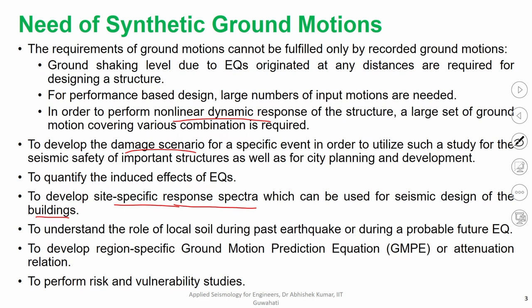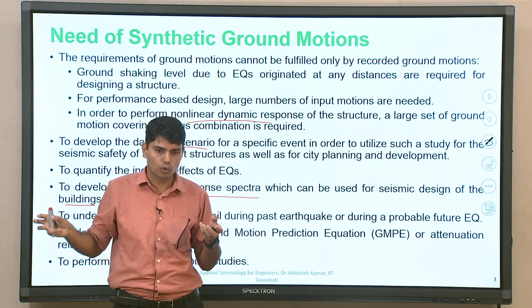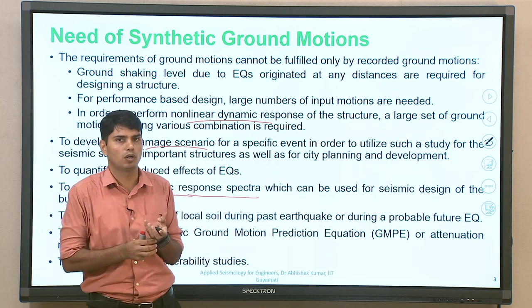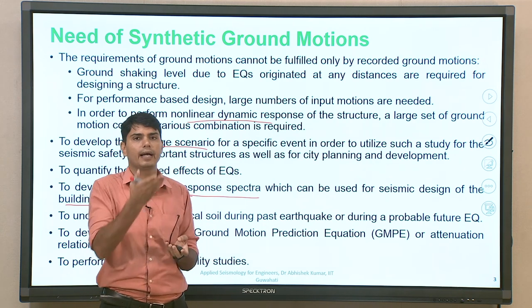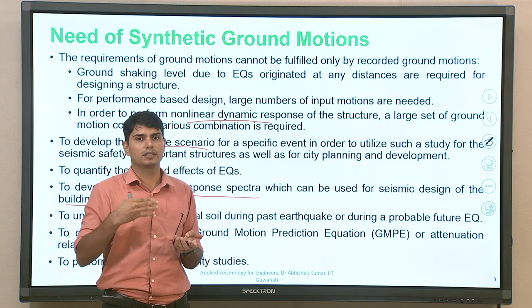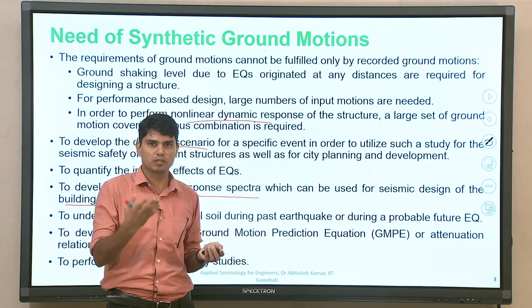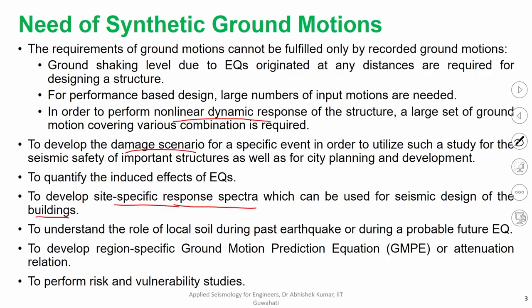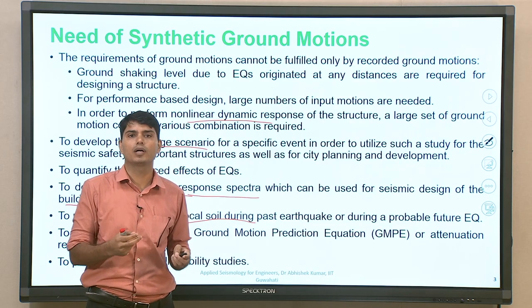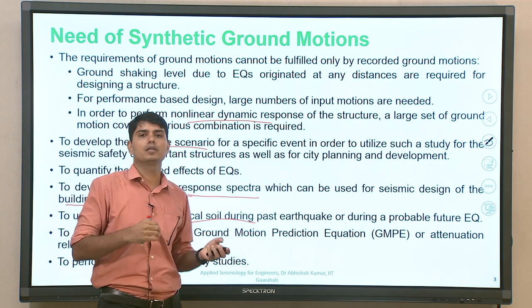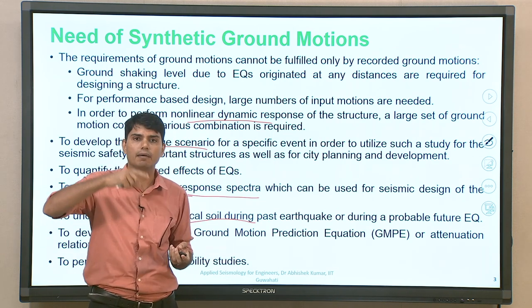To find out how local site effect plays a role — whenever vibrations are transferred from source to the site of interest, at the bedrock level the vibration will be relatively small. But because of local soil available between bedrock and the surface, the vibration many times undergoes amplification. This amplification can be maybe 1.1 times, or as high as 3 to 4 or even 5 times, which has been witnessed during past earthquakes. More about this amplification because of local soil will be discussed in later lectures on ground response analysis.